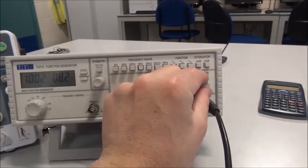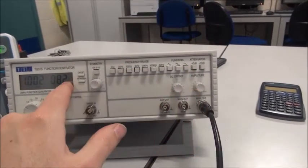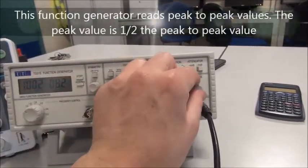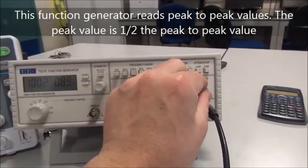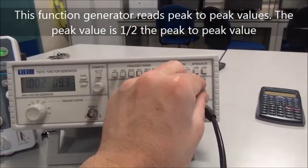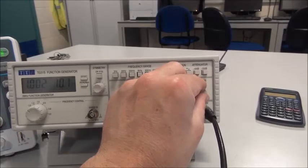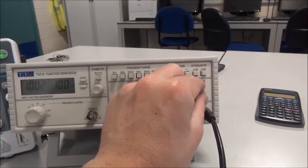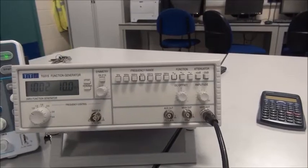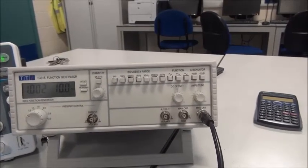Now, one thing to be aware of is the function generator has a peak-to-peak display. So peak-to-peak is twice the peak value, so to set this up correctly, we should have 10 volts peak-to-peak. And that is all you need to do for the function generator.